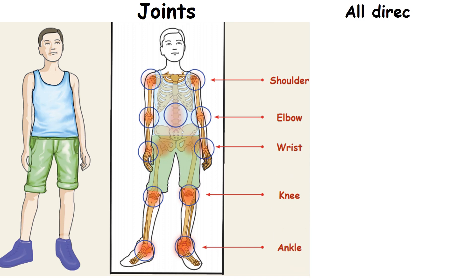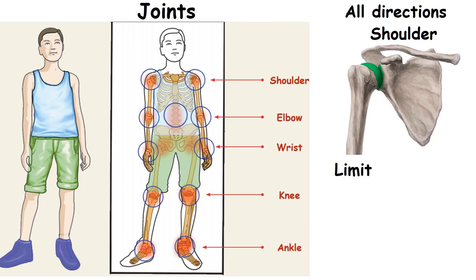Some joints can move in all directions. Example, shoulder. And some joints have limited movements. Example, elbow.